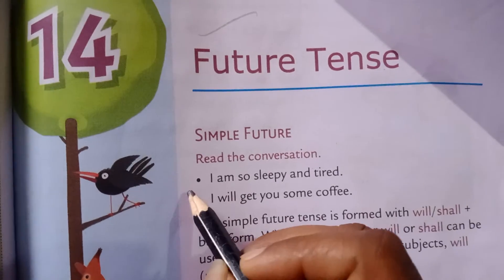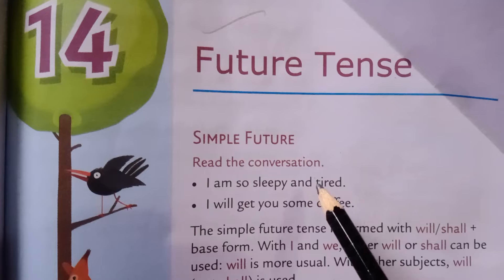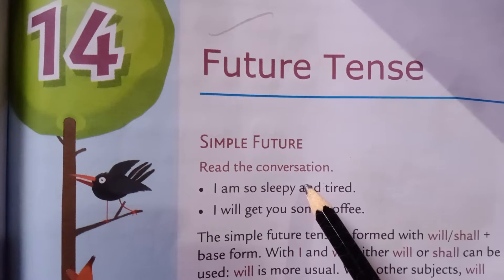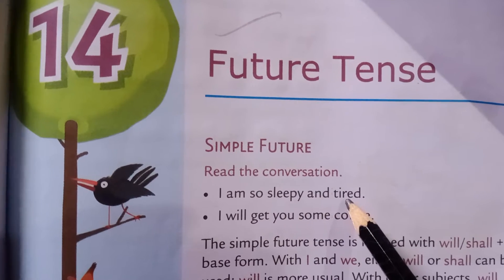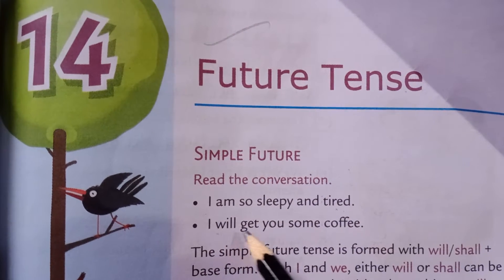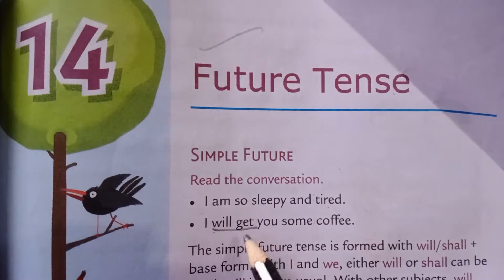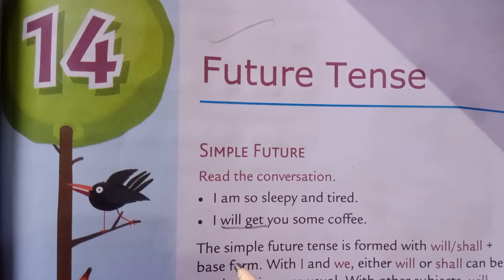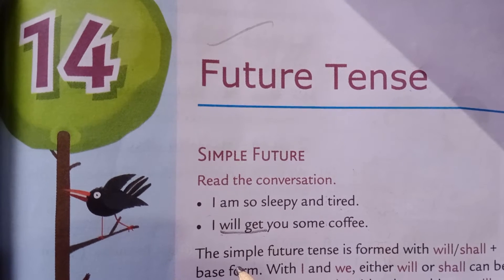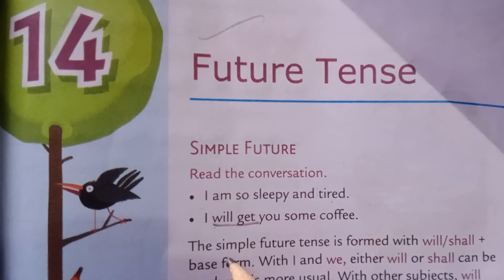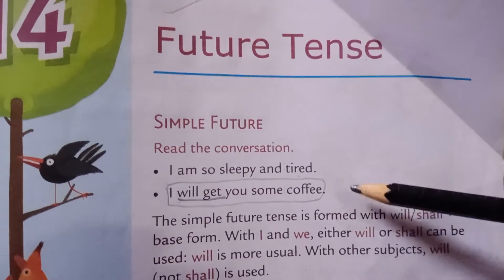Imagine the first person is saying: 'I am so sleepy and tired.' The next friend is saying: 'I will get you some coffee.' Here it is 'will get.' He doesn't have to bring it yet. He says 'I will bring you some coffee' — he has not brought the coffee yet. So this is the event which is going to happen. It has not happened. This is something that is going to happen.